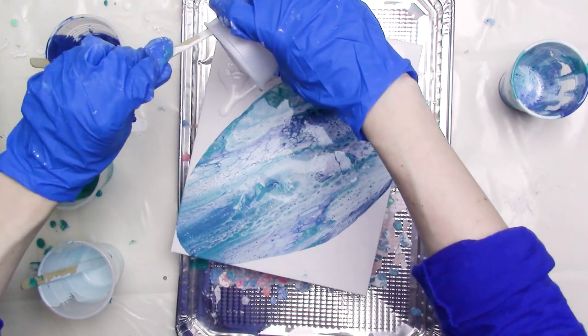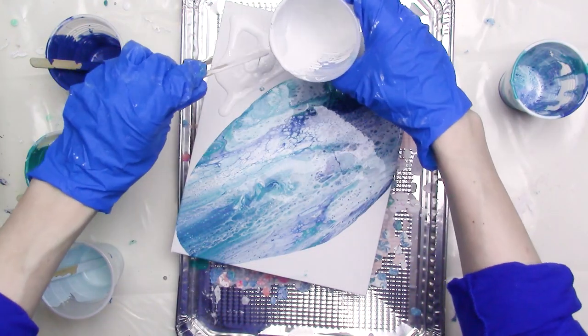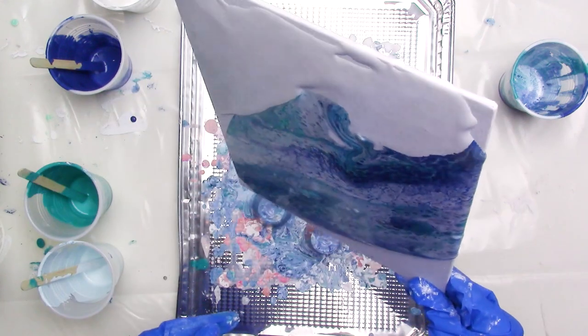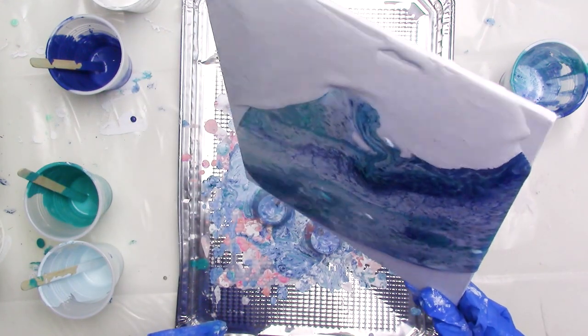I'll add some of the white paint around the main pour area to create a little bit of negative space, just like I did for the first painting, and then I'll continue tilting the panel around until I'm happy with what I've got.